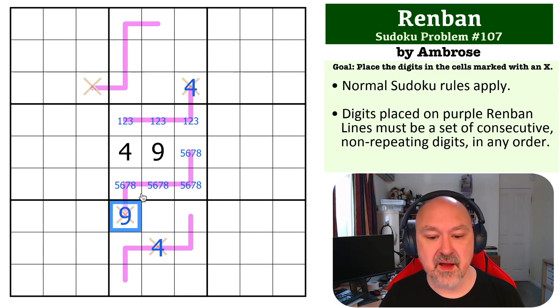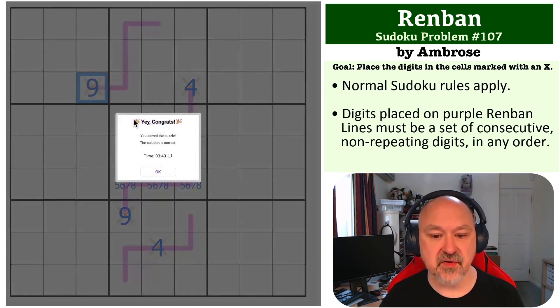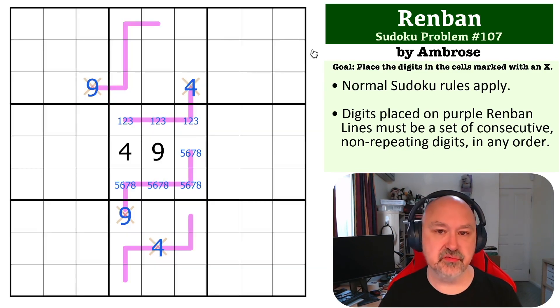So this is five, six, seven, eight, nine. And because of these two nines, I cannot put nine in any of those cells. This is the only place for the nine. And that is the solution to this problem.